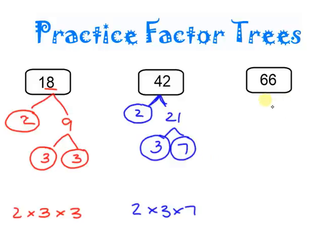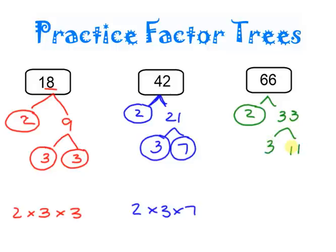Over here I have 66. I always like to start with 2. 2 goes into 66 thirty-three times. 33 looks like a weird number but it is composite because 3 goes into it — 3 plus 3 is 6, so 3 goes into 33 eleven times. 3 is prime and so is 11. So my answer is 2 times 3 times 11.